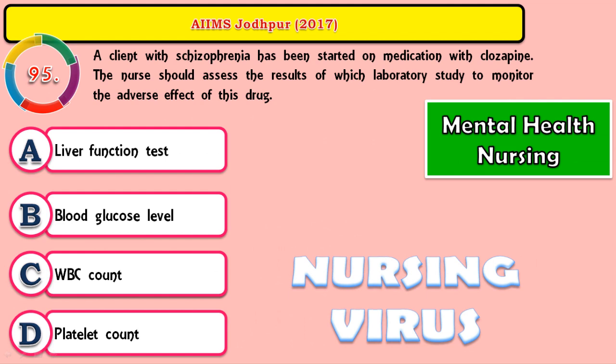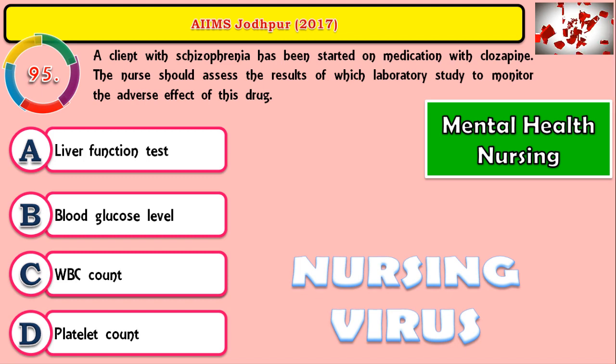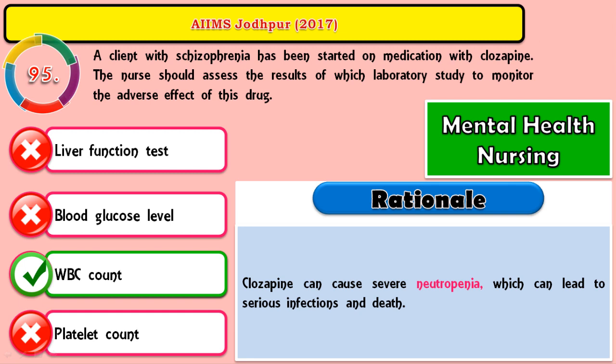Question 95: A client with schizophrenia has been started on clozapine. The nurse should assess the result of which laboratory test to monitor the adverse effect of this drug? The correct answer is WBC count. Clozapine can cause neutropenia, which can even lead to death, so we must compulsorily check and monitor the WBC count.